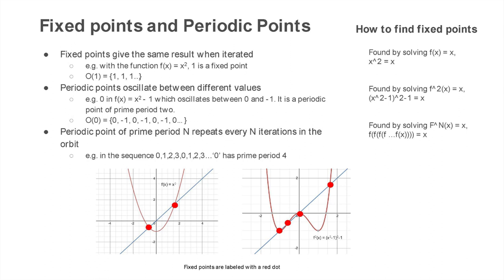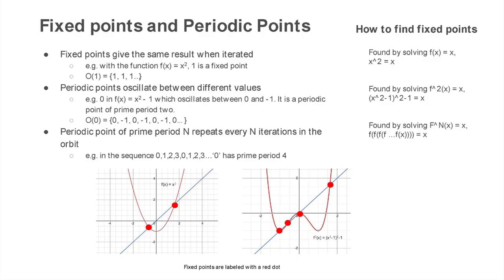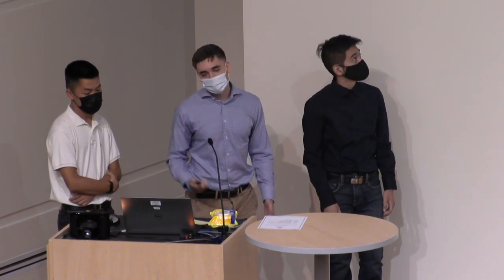For periodic points, we take a similar approach, except instead of solving for where the function crosses the line y equals x, we solve for where the nth iterate of the function crosses y equals x. This will give us all the periodic points of prime period n, n minus one, n minus two, all the way down to zero. When solving for these periodic points for different prime periods n, we can't solve for all of them at once. We have to solve for each prime period individually, reaching some limitations in what computers can do in the real world.